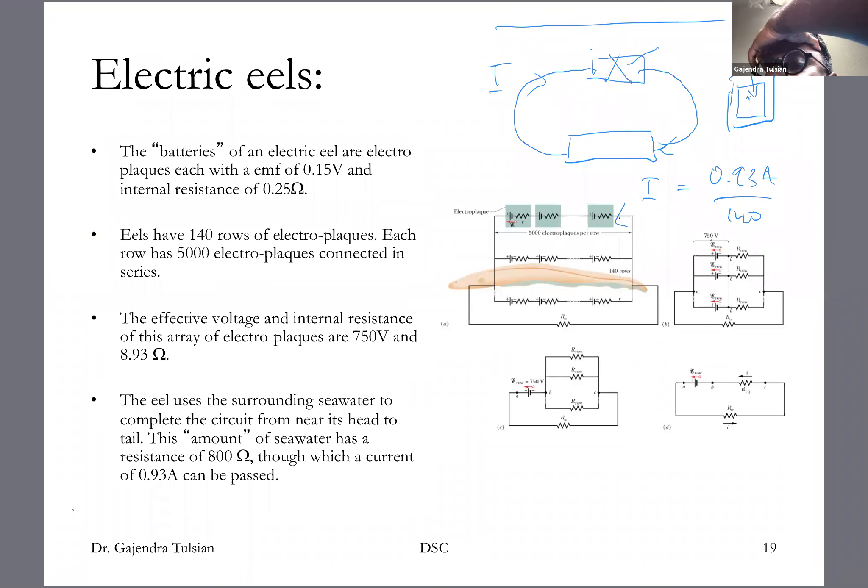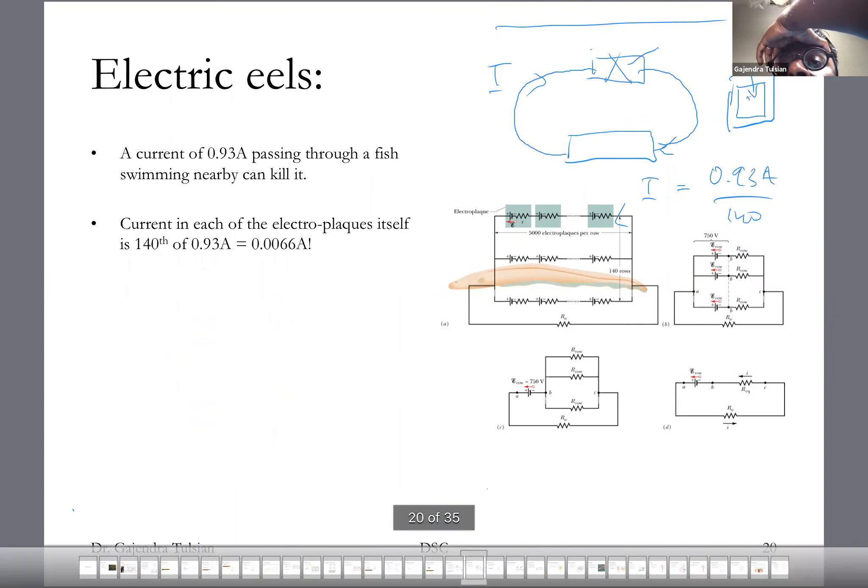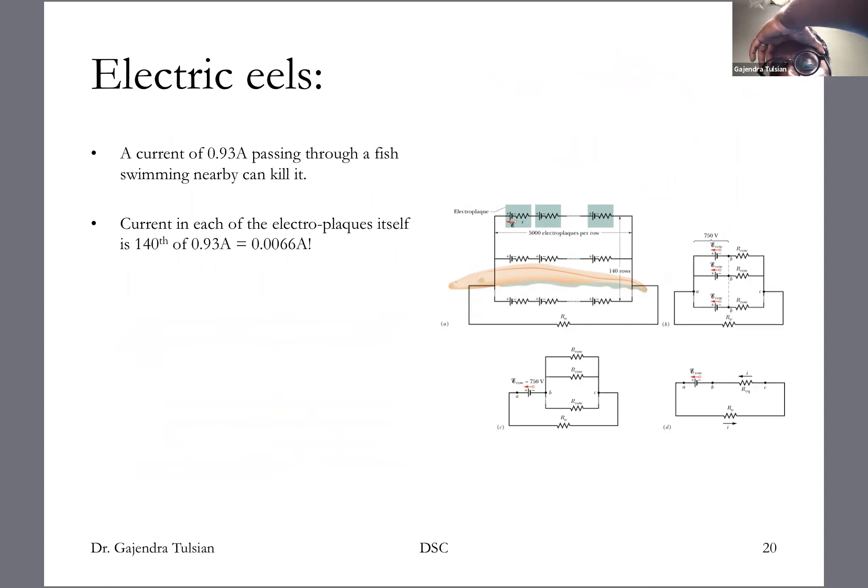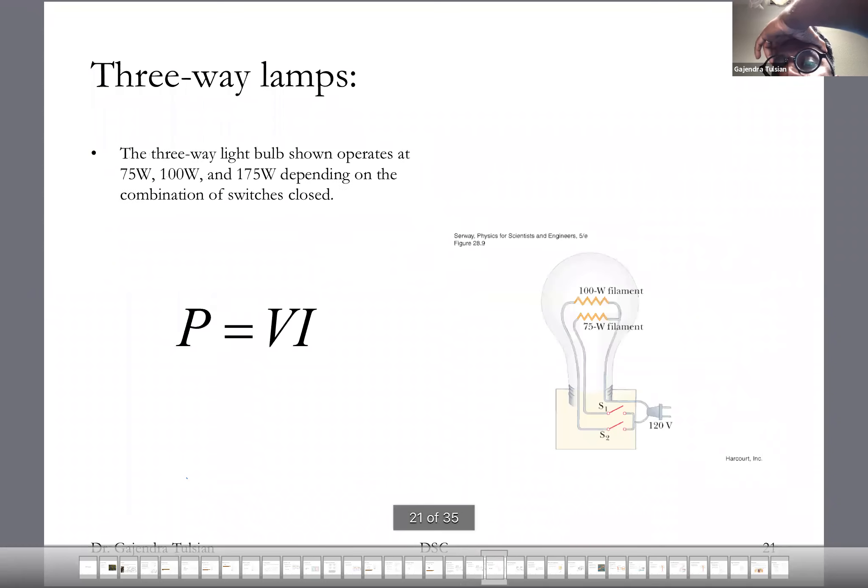All right. So anyway, so the eel is a fascinating thing. Okay. So current in each of the electroplaques itself is 1/140th of that, which is 6 milliamps, 6.6 milliamps. And the eel, you can survive that pretty easily. Okay. So enough of eels. I want to eat sushi now.